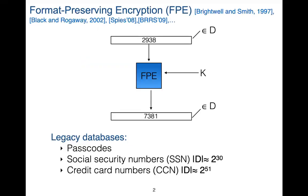Format preserving encryption, or FPE in short, is essentially a deterministic block cipher. It encrypts a message from domain D to the same domain, and the domain is defined with a format. I'm showing an example of four digits, and the format is defined with the length of the message — in this case it's four — and with an alphabet. In this case it's a set of digits, so it is Z10.